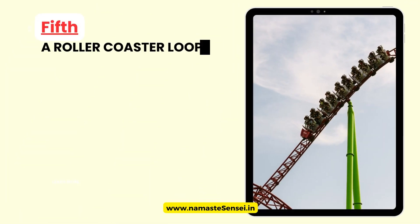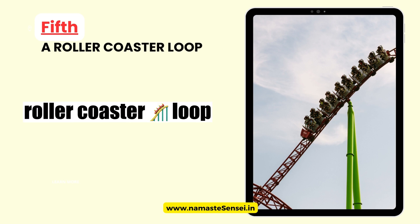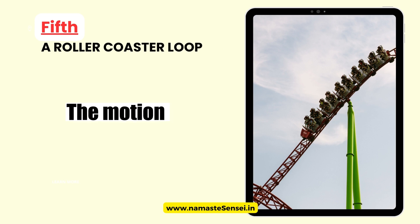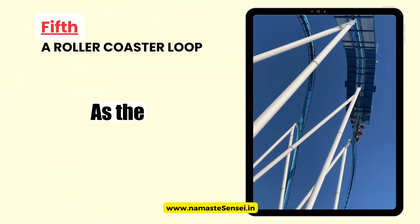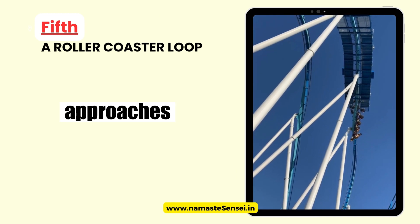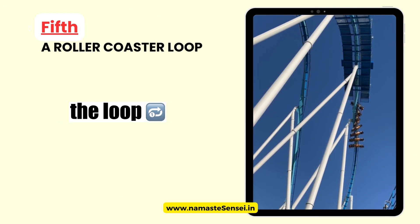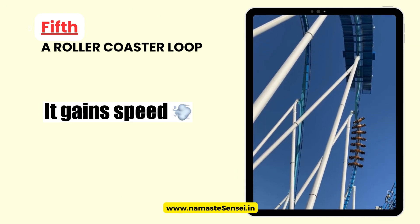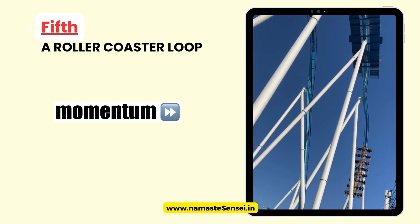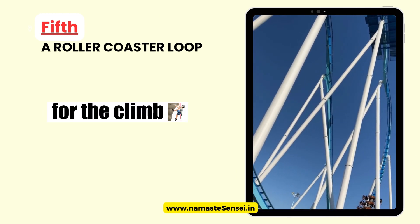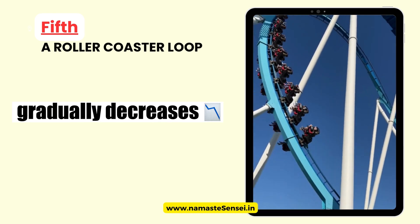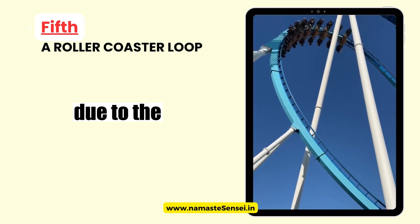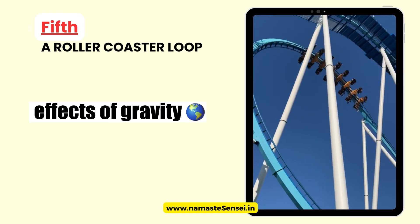Fifth, a roller coaster loop. During a roller coaster loop, the motion showcases non-uniform circular motion. As the roller coaster approaches the loop, it gains speed, providing momentum for the climb. However, as it ascends, the speed gradually decreases due to the effects of gravity.